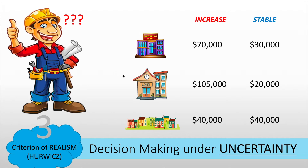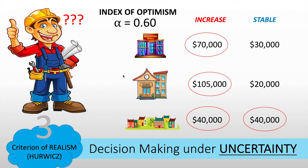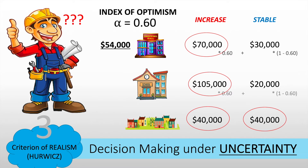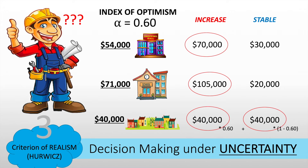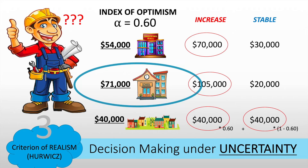Now the third approach — the criterion of realism, or the Hurwicz approach. We need an index of optimism; for example, alpha equals 0.60. Look for the biggest value for each alternative, then multiply it by alpha (0.60) and the other value by (1 minus alpha, which is 0.40), then add them. For shopping mall: $54,000. For school: $71,000. For houses: $40,000. The maximum is to build the school at $71,000.